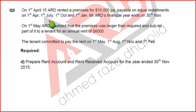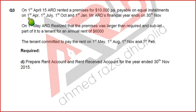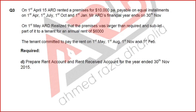The installments are due on 1st April, July, October, and January. The annual rent is £10,000 paid in four equal installments per year. If we divide £10,000 by four equal payments, this becomes £2,500 per installment.